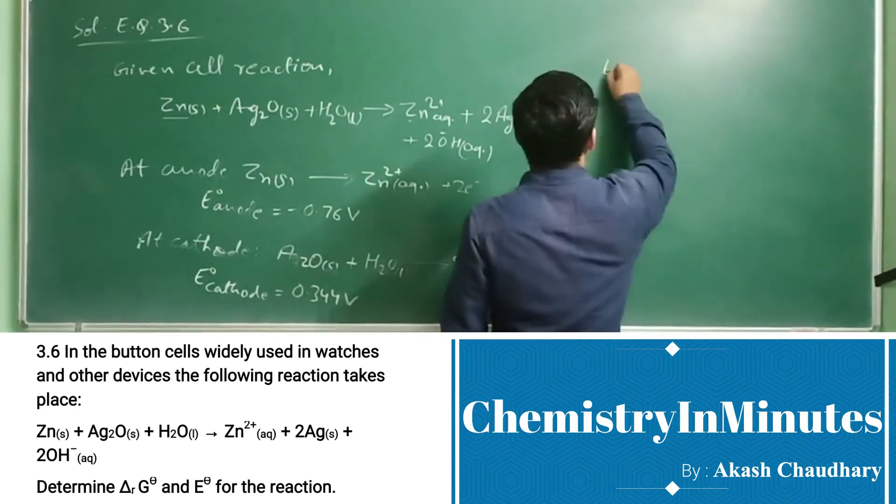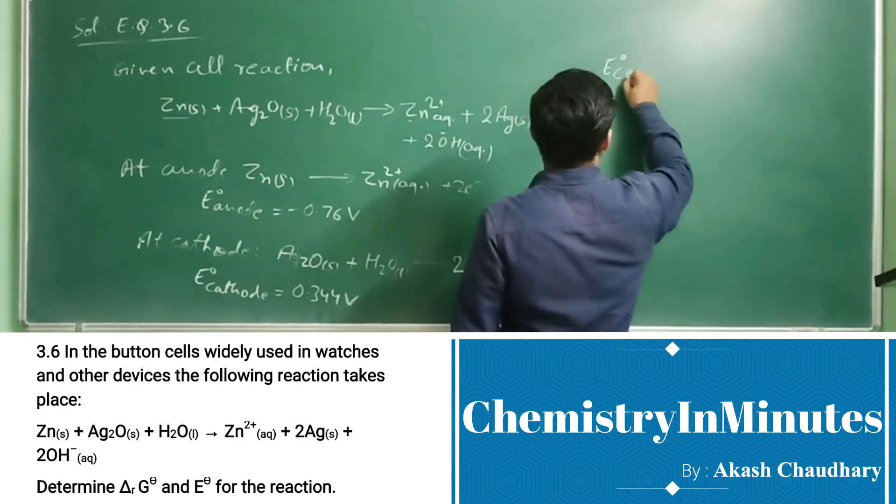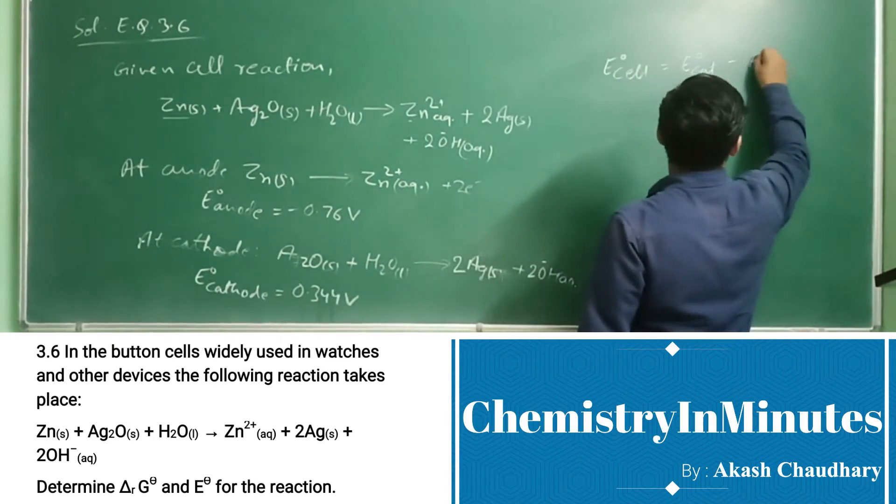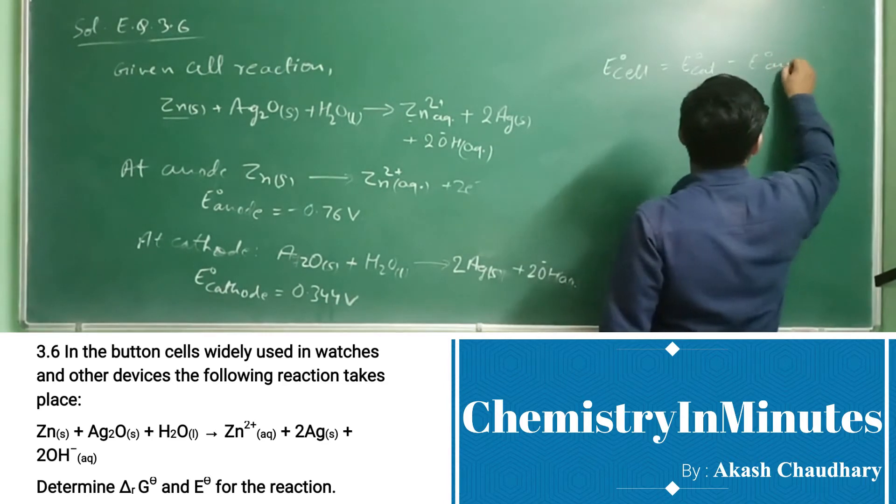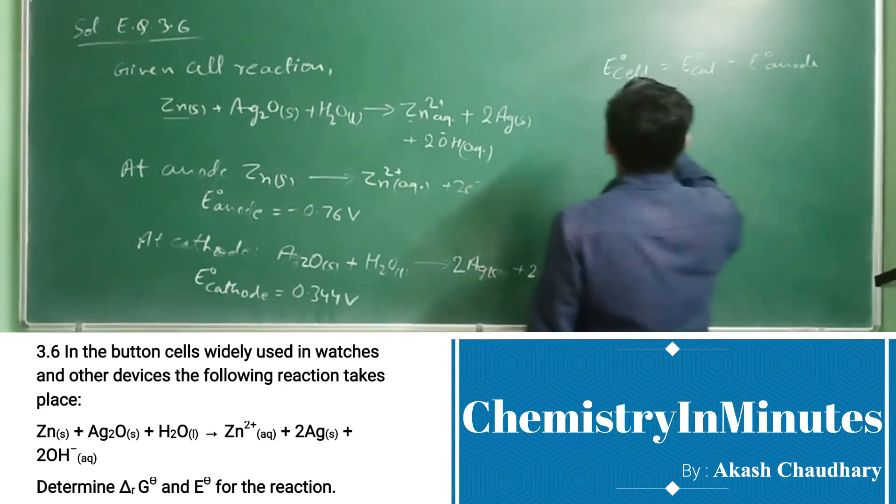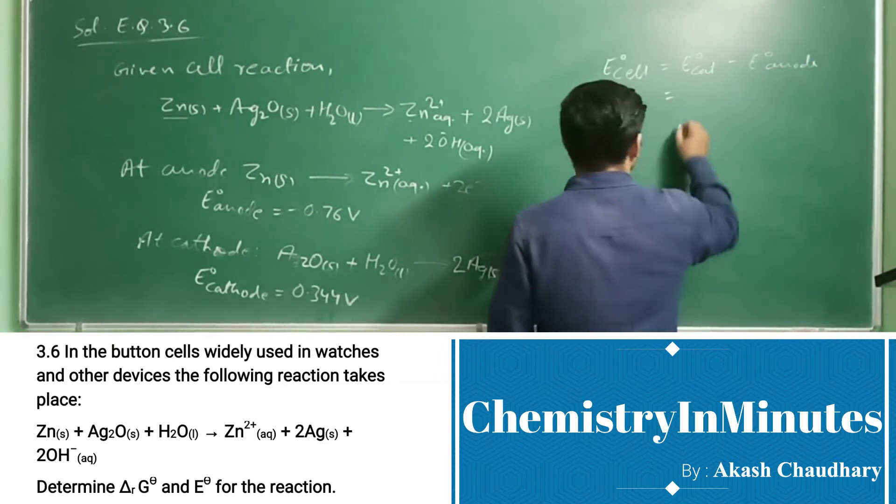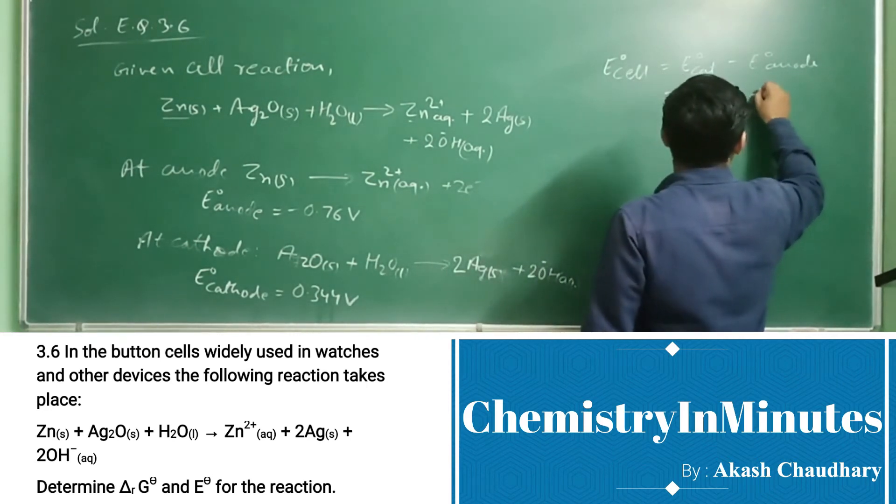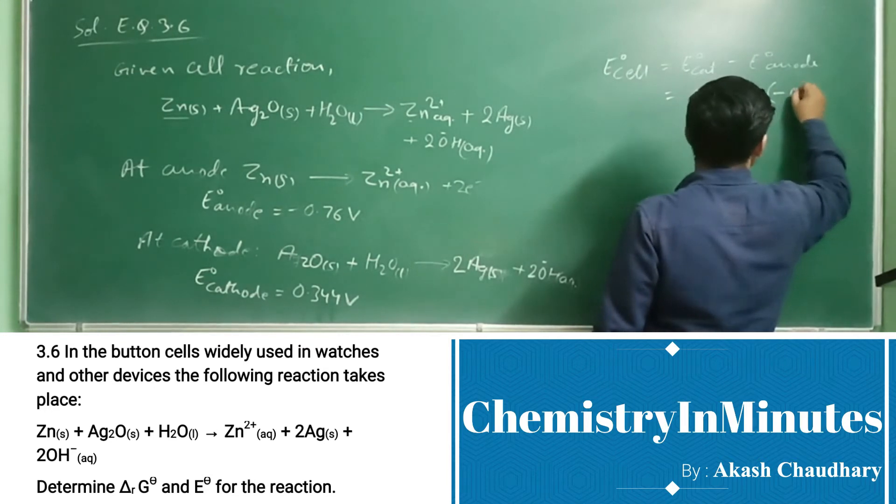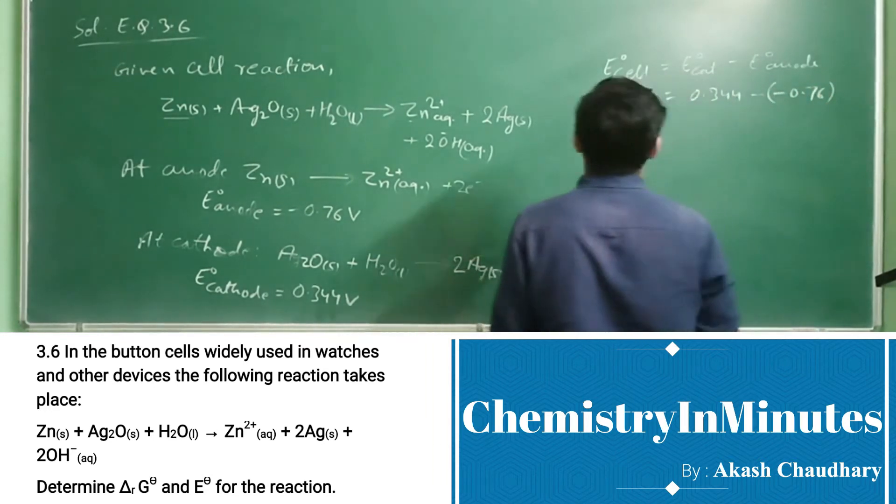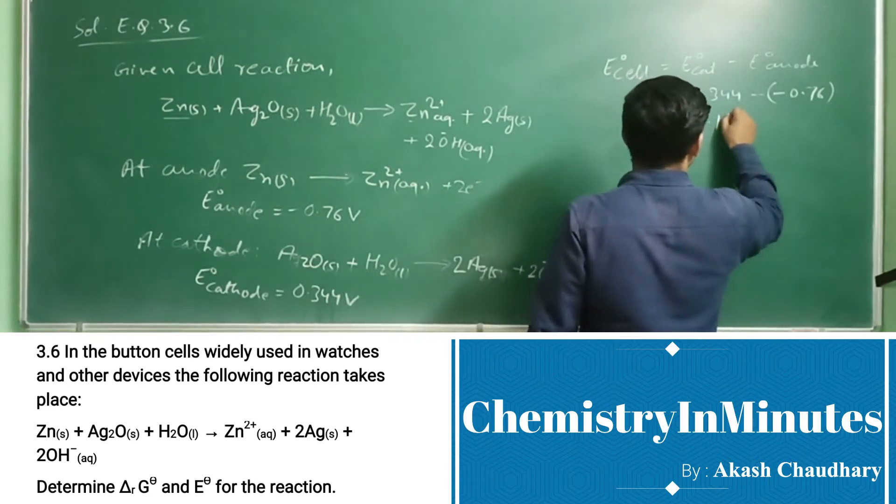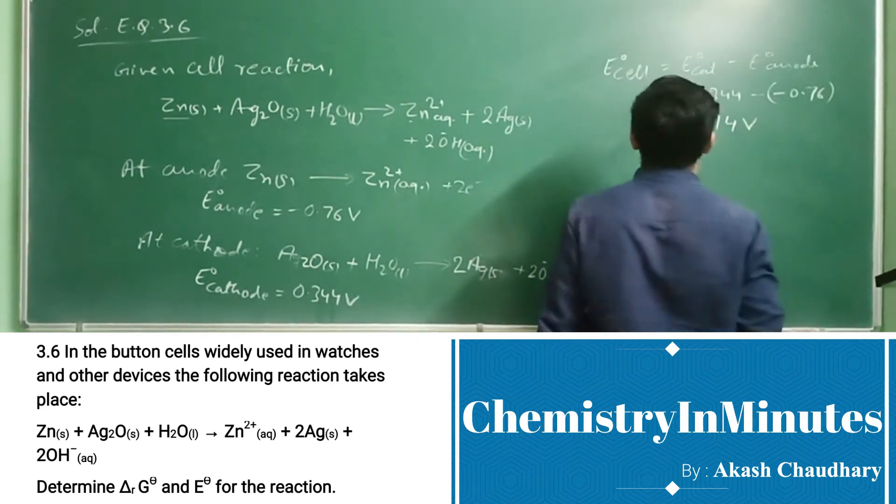Now, E0 cell is equal to E0 cathode minus E0 anode. E0 cathode is 0.344 minus minus 0.76. On solving this, we will get 1.14 volt as E0 cell.